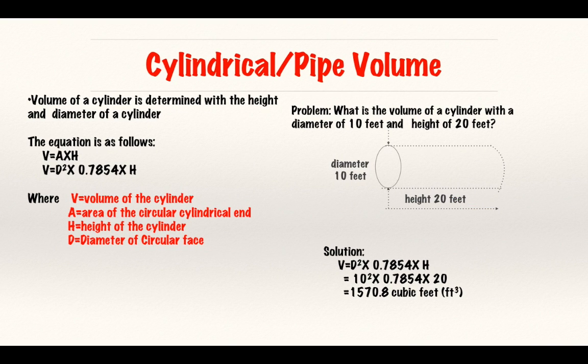So cylindrical volume. It just means the volume of a cylinder. We are all aware of what a cylinder is, just a cylindrical shape with a circle of face. So it's determined with the height and the diameter. That's how you find the volume of a cylinder, from the height and the diameter of that cylinder.